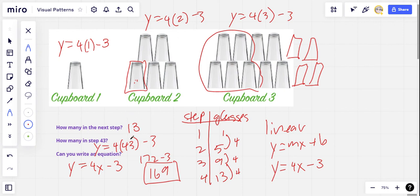Well, how did that go for you? Did you figure out 13 in cupboard four? Did you figure out 169 in cupboard 43? Let me know. Thanks, everybody.